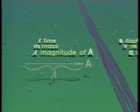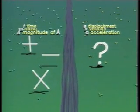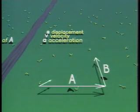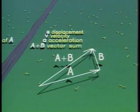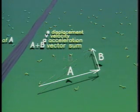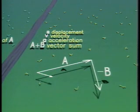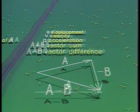With vectors, even the most familiar mathematical operations acquire an entirely new meaning. For example, when two vectors are added together, the sum isn't merely a number — it's a new vector. Also, vectors can be subtracted from each other, and the result is another new vector.